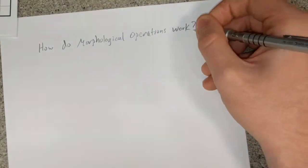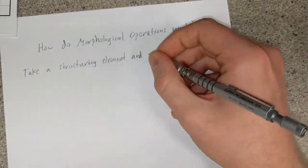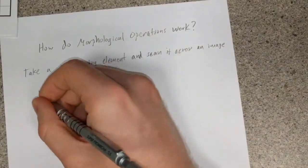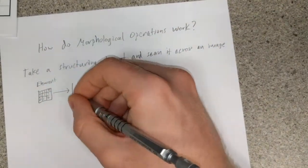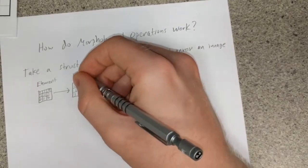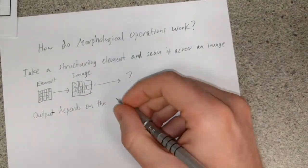How does this all come together to bring greater clarity to our image? First, we take our structuring element and scan it across our starting image. As we move across, one of two things will happen.